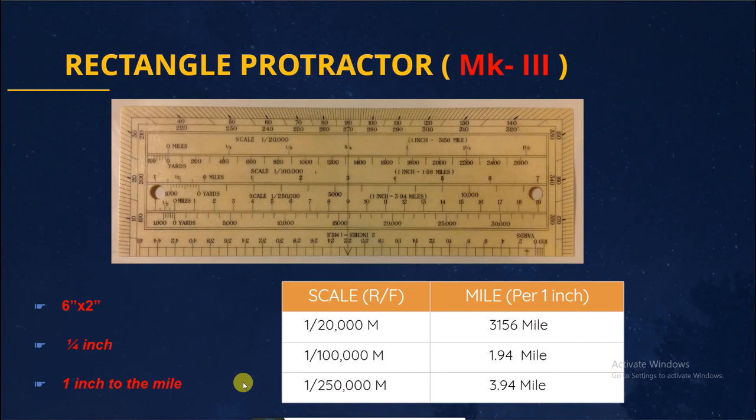Clearly observe table reference factor of readings per 1 inch. 1 by 20,000 meters is equal to 3156 miles. Based on the rectangular protractor scale, readings are like this.